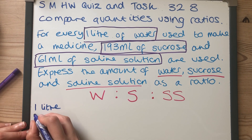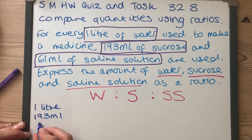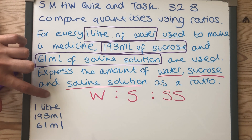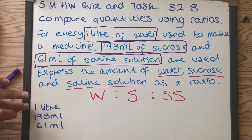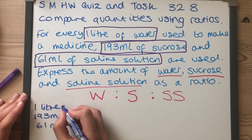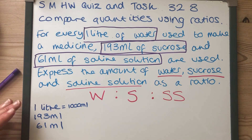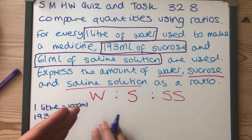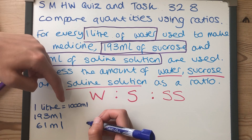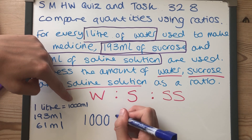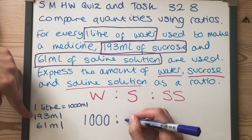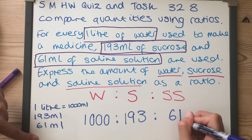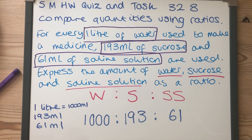I'm going to write them here: one litre, 193 millilitres, and 61 millilitres. I need to change one litre into millilitres. Does anyone remember how many millilitres there are in one litre? If you said one thousand, you would be absolutely right — there are a thousand millilitres in one litre. So now I've got them all in millilitres: water is 1000 millilitres, sucrose is 193, and saline solution is 61. That is my ratio. Any questions — get in touch with me, hopefully that's helped with your homework.